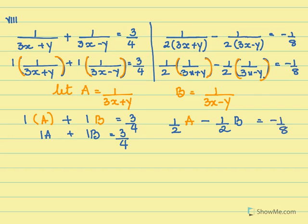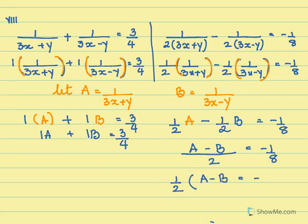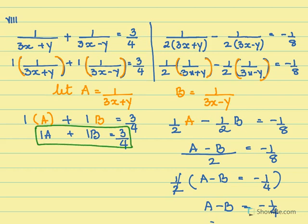In the second equation I need to take an LCM. So 2 is my LCM, giving a minus b equal to minus 1 by 8. I can take 1 by 2 common out, so what remains is a minus b equal to minus 1 by 4. So I have a plus b equals 3 by 4 as equation 1, and a minus b equals minus 1 by 4 as equation 2.